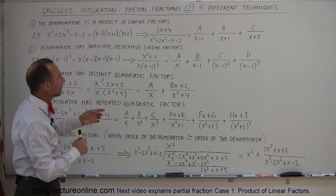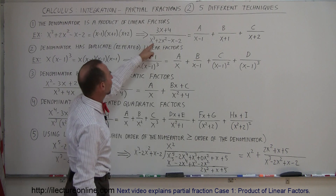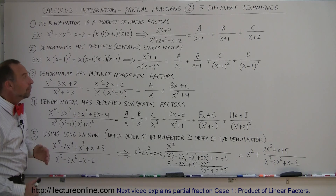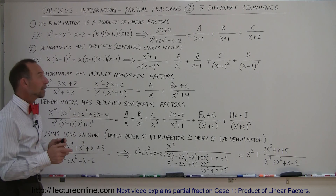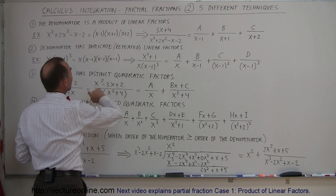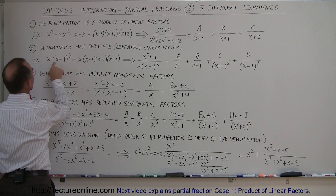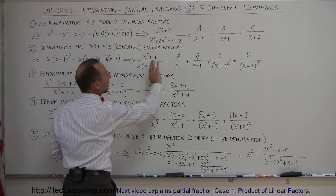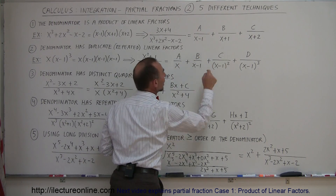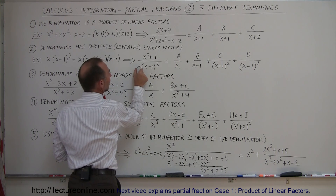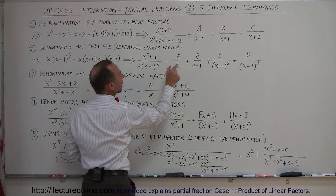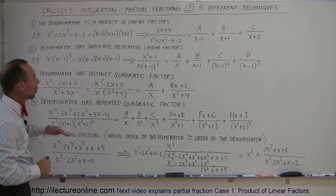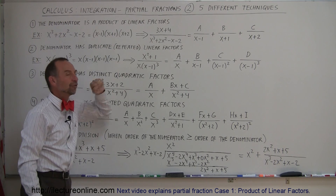The first case is where the denominator is simply a product of linear factors. The second type is where the denominator still has linear factors, but in some cases they are repeated or duplicated. For example, if we have x times x minus 1 quantity to the third power in the denominator, we write it as partial fractions: a over x, plus b over x minus 1, plus c over x minus 1 squared, plus d over x minus 1 cubed. That's the special technique we use when the denominator has duplicate linear factors.